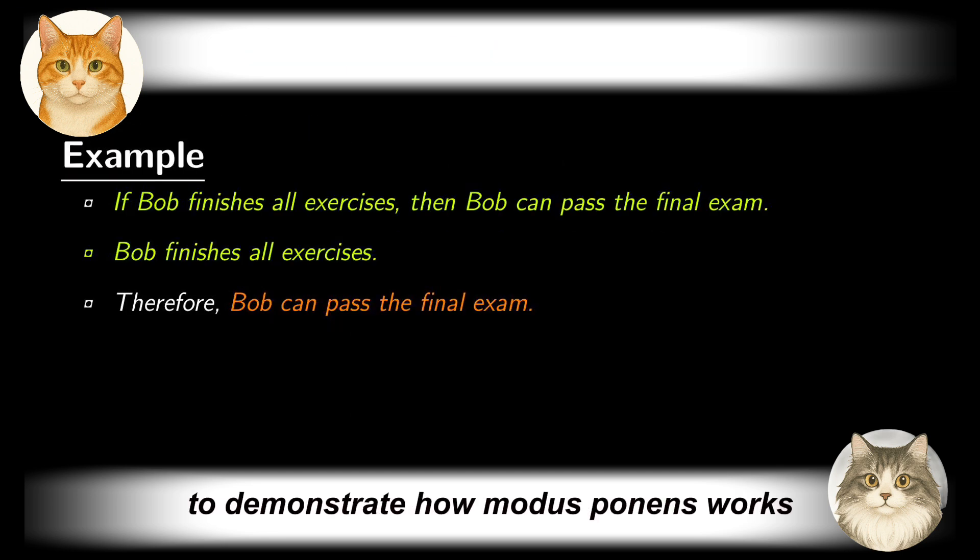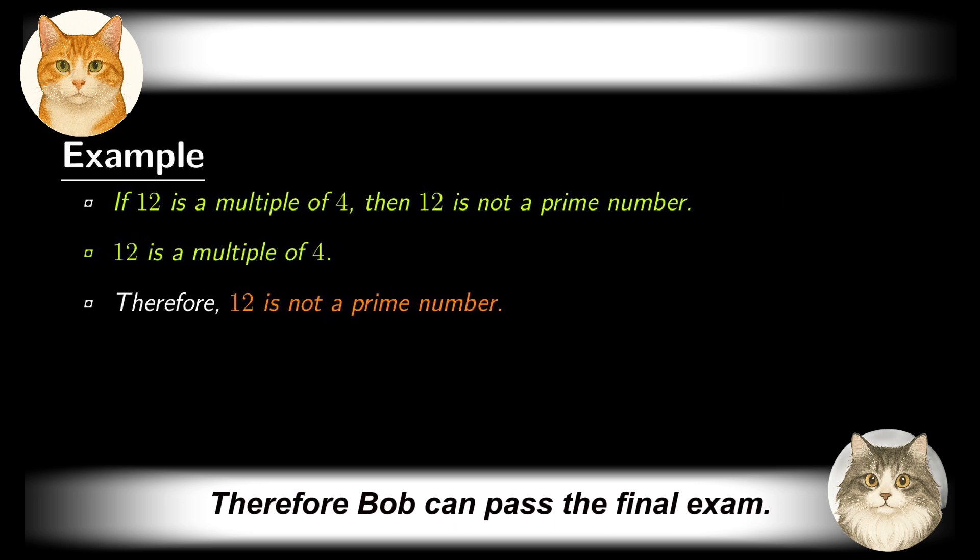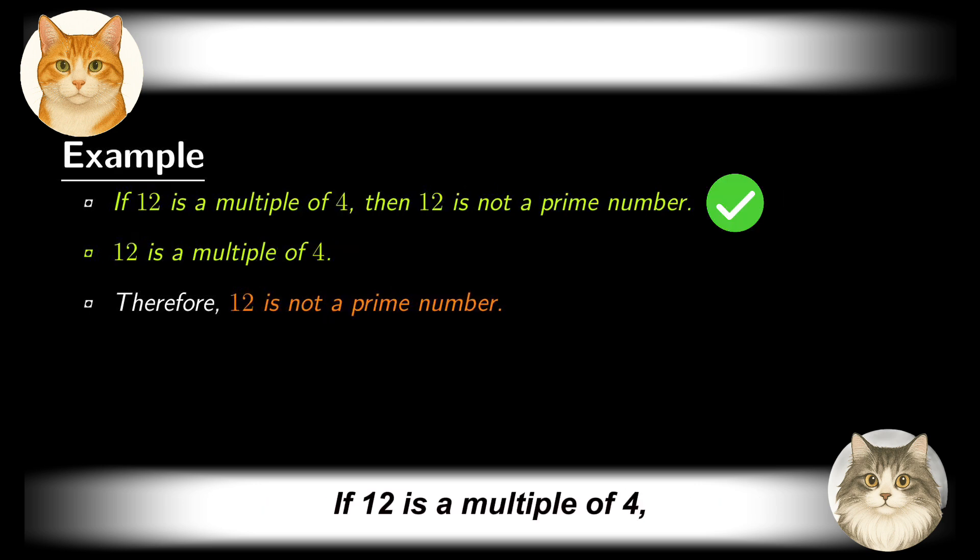We furnish some examples to demonstrate how modus ponens works. If Bob finishes all exercises, then Bob can pass the final exam. Bob finishes all exercises, therefore Bob can pass the final exam. If 12 is a multiple of 4, then 12 is not a prime number. 12 is a multiple of 4, therefore 12 is not a prime number.